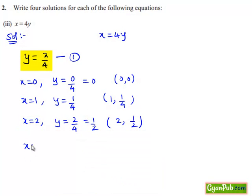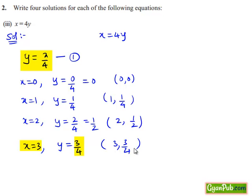Now let us put x equals to 3 in equation number 1. Then we get y equals to 3 divided by 4. That means (3, 3/4) is one of the solutions of equation number 1. Hence we have found the four solutions of the given equation x equals to 4y.